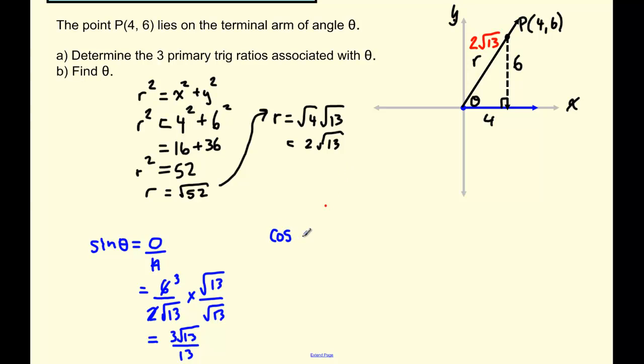Cosine theta, same idea. We just want the adjacent over the hypotenuse. So the adjacent is 4. The hypotenuse is 2 root 13. And again, I can simplify this 2 and the 4. And when I rationalize, I multiply both the top and bottom by root 13. So I end up with 2 root 13 all over 13.